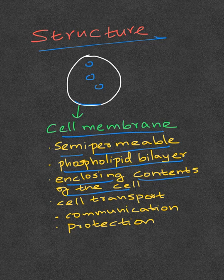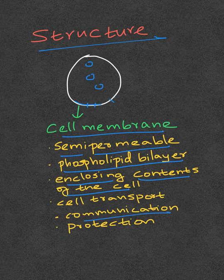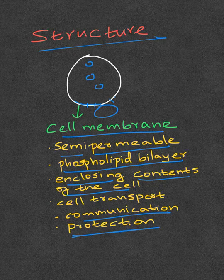The cell membrane also has transport proteins that help in transporting substances into and out of the cell. It helps in communication between adjacent cells, and it is also a protective layer protecting the cell from the outside environment.